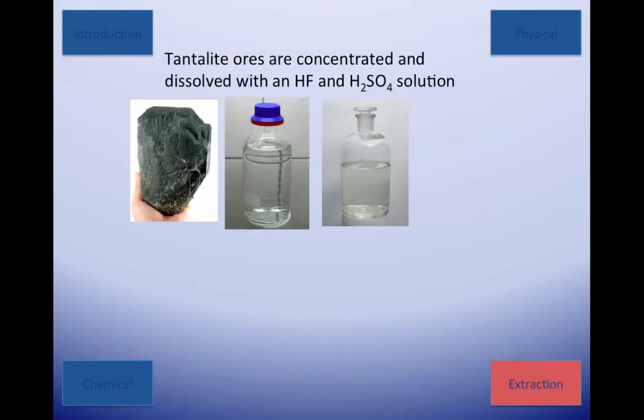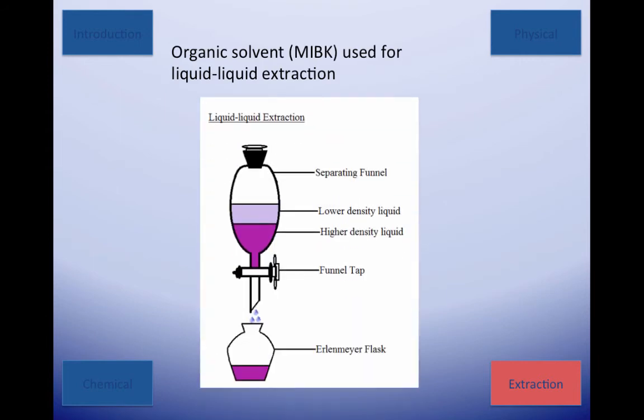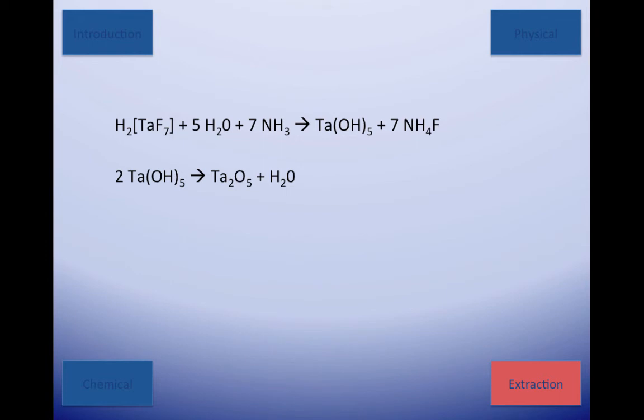In nature, compounds often contain niobium, which means that the tantalum must be extracted. The tantalite ores are concentrated and dissolved with a hydrofluoride and sulfuric acid solution. In organic solvent, MIBK is used for the liquid-liquid extraction. And once the organic layer is separated, the niobium is stripped with dilute acid. The tantalum is then extracted with acid ammonium fluoride, potassium fluoride, and molten salt.